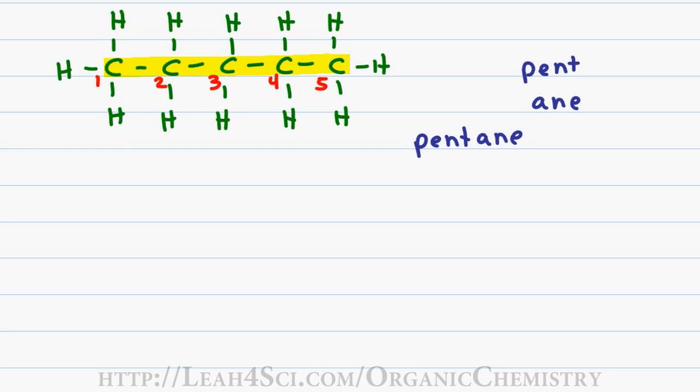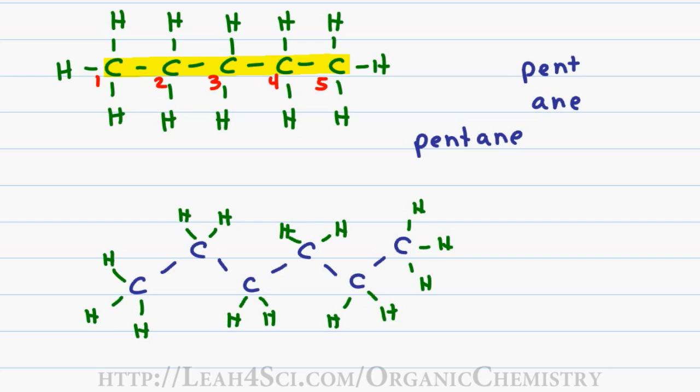Recall that SP3 bonds have a bond angle of 109.5 degrees. This means if your molecule is drawn out more realistically, it'll actually look something like this. Don't let the angles between the carbons fool you. If you can place your highlighter on the first carbon and then trace it all the way to the end of the chain without having to lift in the middle, this tells you that you have one continuous parent chain.